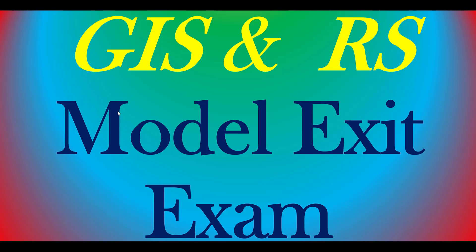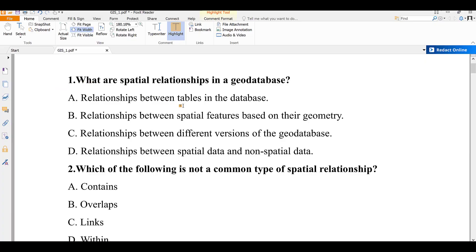Question number one: what are the spatial relationships in a geodatabase? A) a relationship between the fields in a geodatabase, B) the relationship between spatial features based on their geometry, C) a relationship between different versions of the geodatabase, D) the relationship between spatial data and non-spatial data. The correct answer is B — the relationship between spatial features based on their geometry.